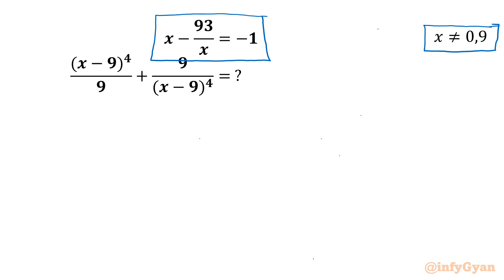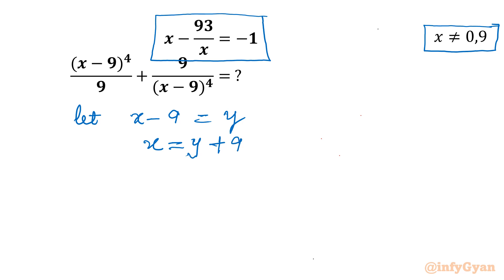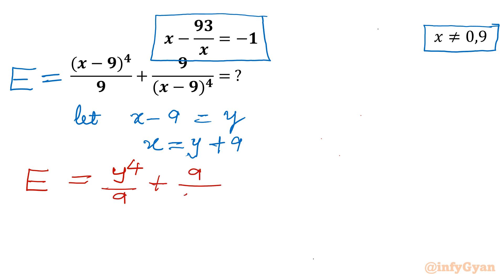Let's get started by considering the substitution x minus 9 equal to y, or equivalently x equals y plus 9. Now I will write our unknown expression as E. Substituting into the expression, E equals (x minus 9) to the power 4 over 9 plus 9 over (x minus 9) to the power 4, which becomes y to the power 4 over 9 plus 9 over y to the power 4. This is the expression we have to evaluate.